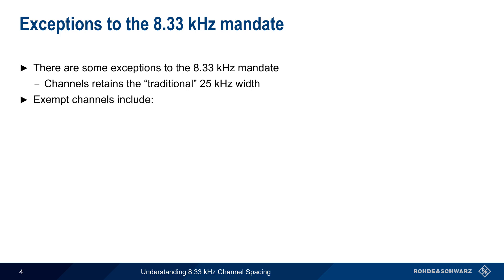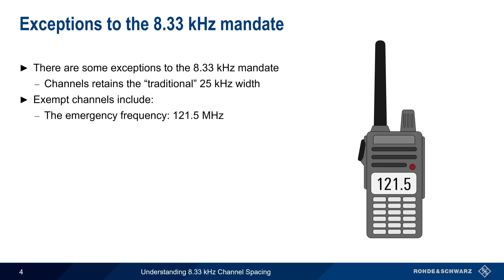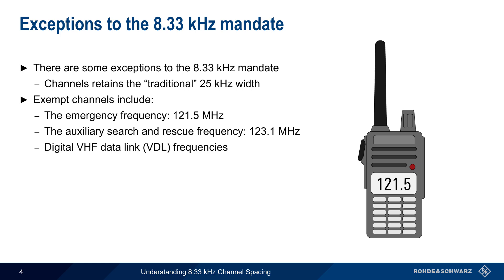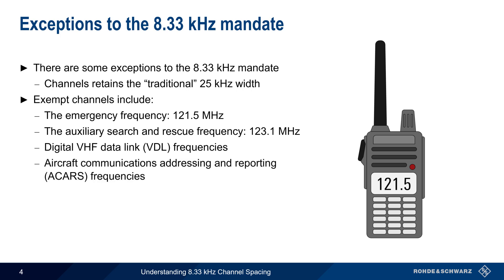These exempt channels include the emergency frequency of 121.5 MHz, as well as the auxiliary search and rescue frequency of 123.1 MHz. The other exceptions concern channels that carry data rather than voice. For example, the VHF data link (VDL) frequencies retain their 25 kHz width, as do the channels used for ACARS — the Aircraft Communications Addressing and Reporting System.